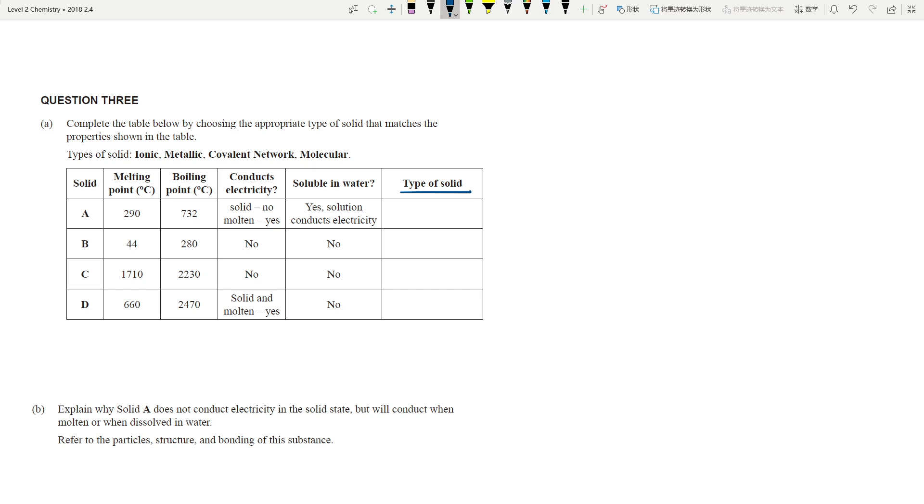First, the sections normally are solids. So this is a slightly different variation of the question asking you to fill in the type of solids when you're given all these clues. First thing first for A when it doesn't conduct electricity as a solid but yes when molten so that must be ionic. If it conducts electricity as a solid that has to be metallic because metals don't dissolve in water. If you look at that melting point and boiling point, that must be a covalent network. And this is molecular. Nice and easy.